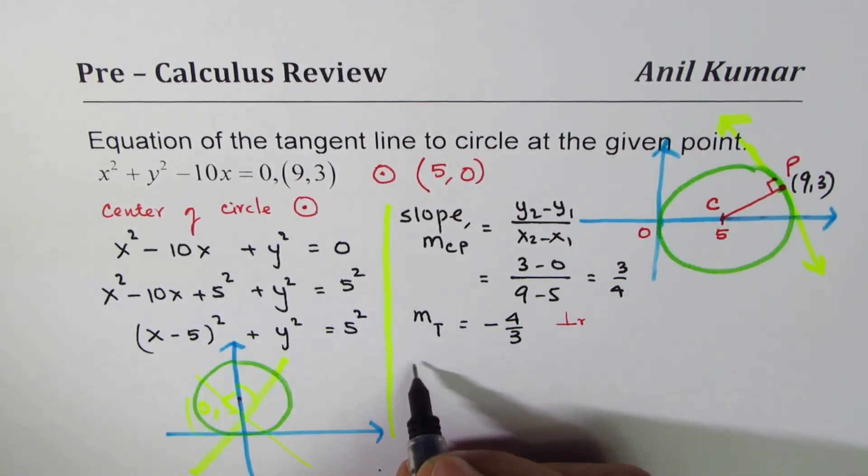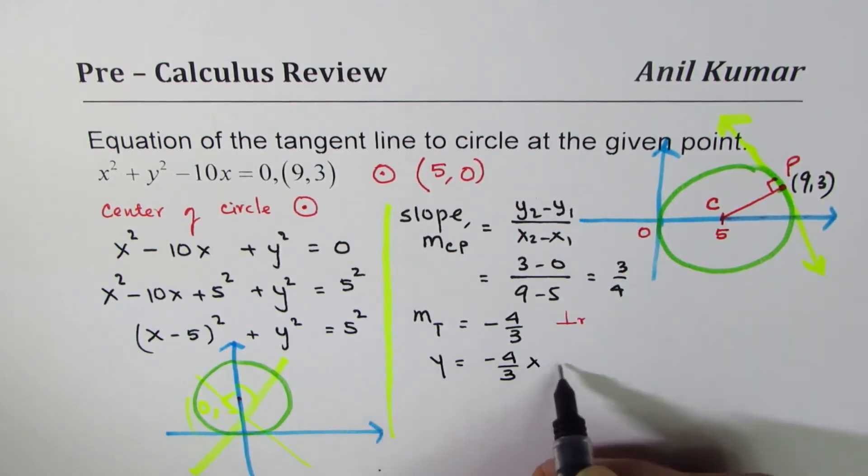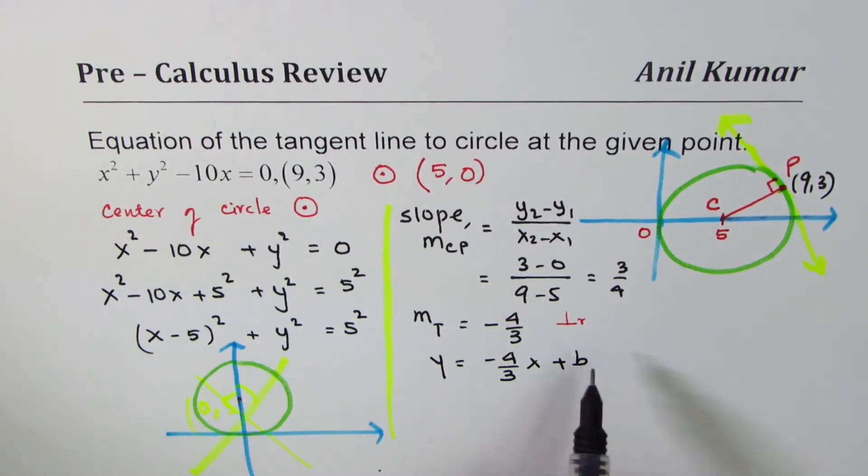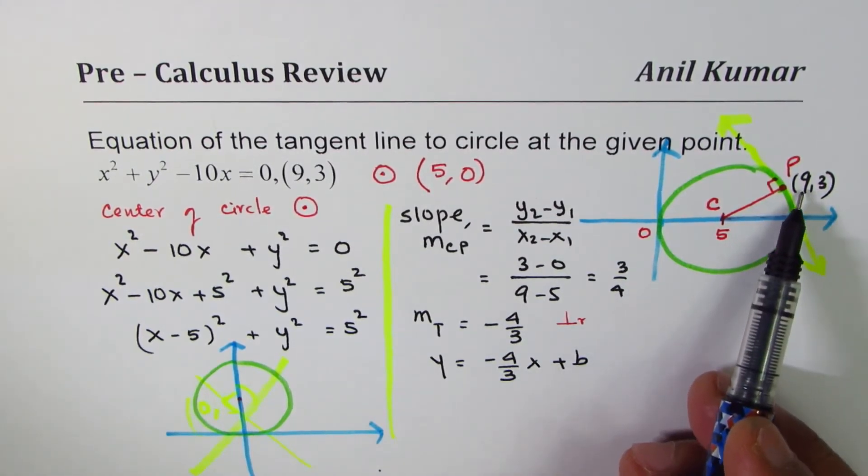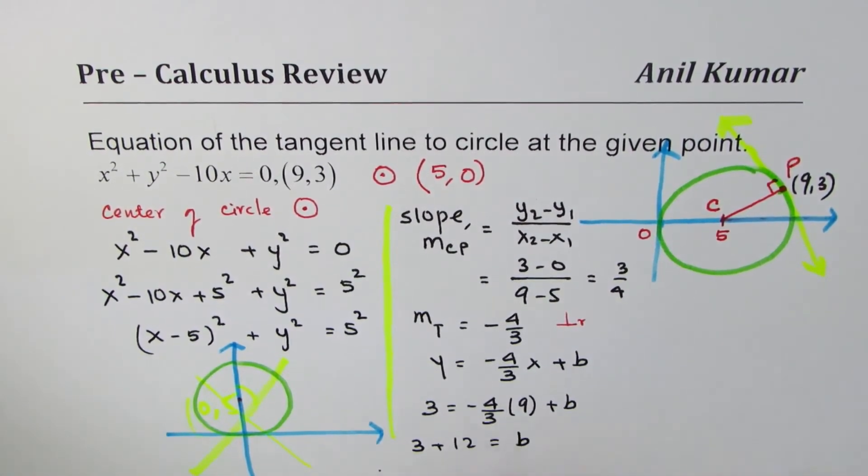Now equation of tangent line will be y equals slope, which is -4/3, x + b. To find the value of b, we have to use this point. x value is 9, y value is 3. So we have 3 = -4/3 × 9 + b. Now this can be simplified. So we get 3 plus, 3 times 4 is 12, equals to b. So what I did was, I first cancelled this. 3 times 4 is 12, this is negative 12, brought it to the left side, becomes positive. So the value of b is 15.